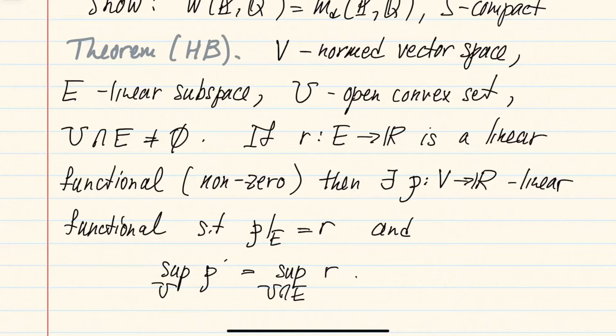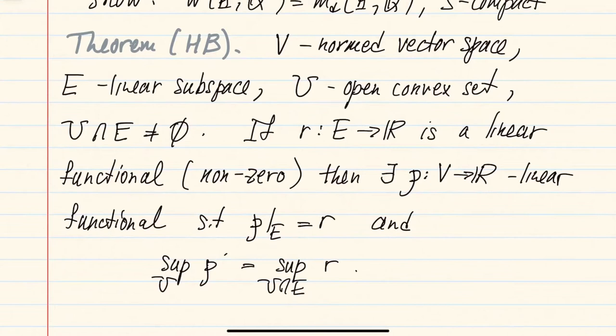In the notes we give a proof of this statement by reducing it to the more well-known form of Hahn-Banach involving separation of two convex sets when one is open. Right now we show how to apply this extension theorem to prove the Kantorovich-Rubinstein theorem on a compact space — we just need to find the right normed space, subspace, convex set, and functional.